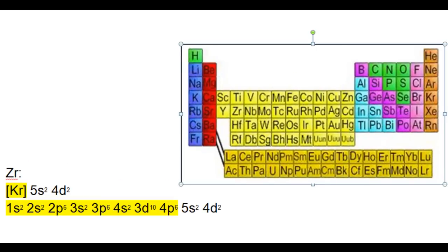And finally we'll look at zirconium. The nearest preceding gas from zirconium is krypton. Write the symbol for krypton, then write the remainder of the electron configuration for zirconium: 5s2, 4d2.